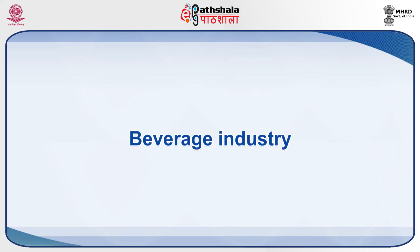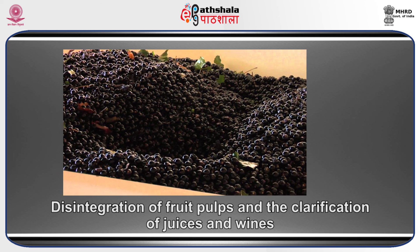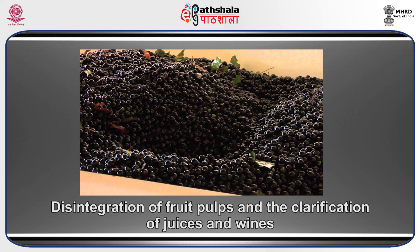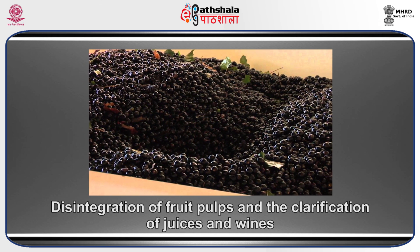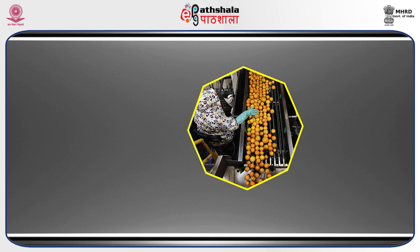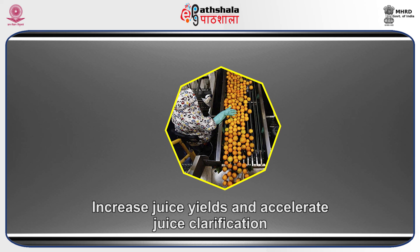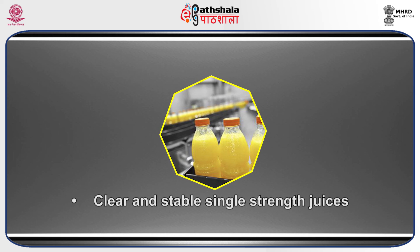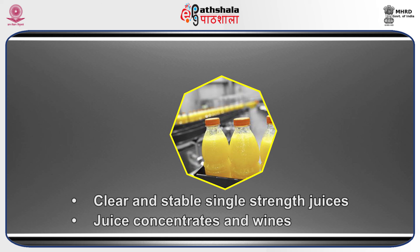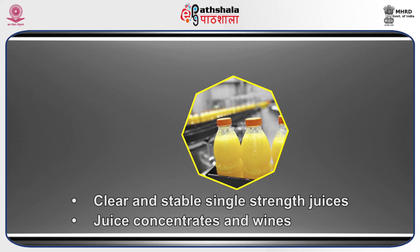In the beverage industry, enzymes are used widely in the disintegration of fruit pulp and clarification of juices and wines. In the fruit juice and wine industries, enzymes decrease processing time and improve economy. Specialty enzymes for fruit and vegetable juices are pectinases that contain hemicellulase enzyme activities. Pectinases are the most frequently used enzymes in food industries, as they facilitate increased juice yield and accelerate juice clarification, and proteases not only increase juice yields but also increase color extraction, juice volume, and functional antioxidants.